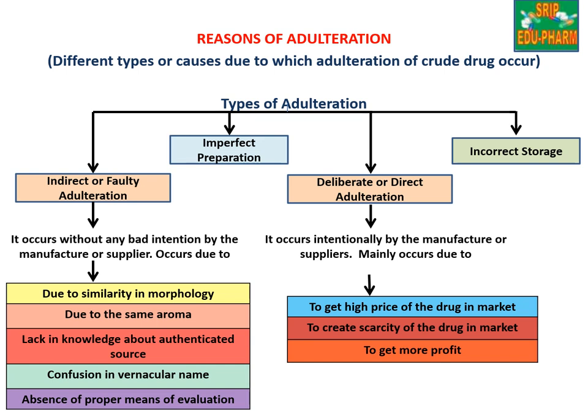Indirect or faulty adulteration occurs without any bad intention. It can be caused due to similarity in morphology, due to the same aroma, lack of knowledge about authenticated sources, confusion in vernacular names, and absence of proper means of evaluation.